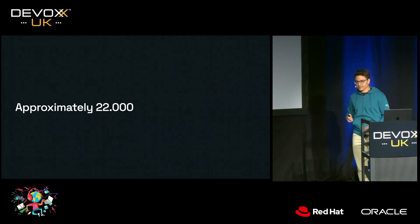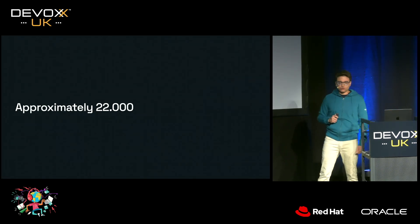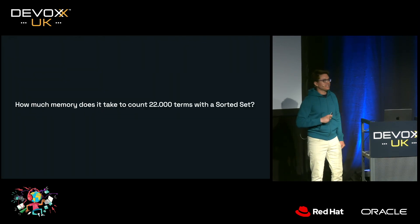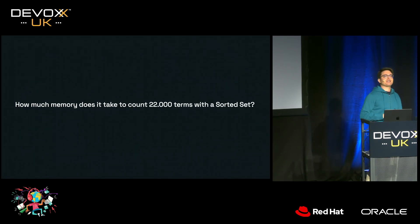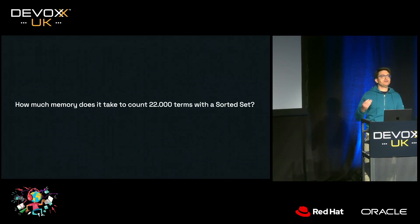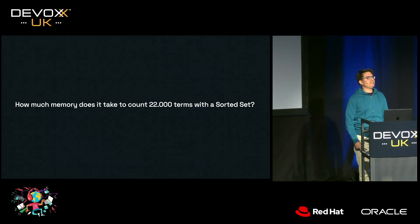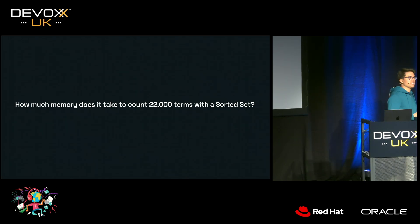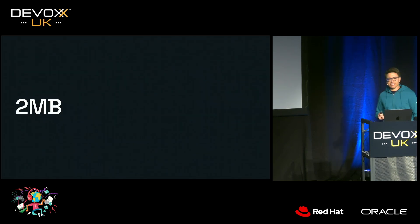If we're using a sorted set for storing these words and counting, how much memory do you think we would use to store these 22,000 unique words in a sorted set? Approximately 2 megabytes.